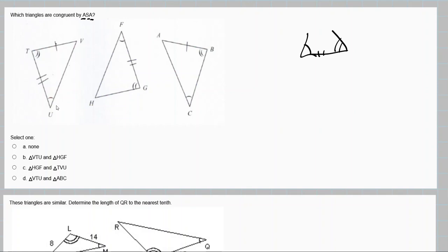That's triangle VTU and triangle HGF. Those are these two. If you chose none, it's quite possible that you'll still get that mark because there was an earlier version of this that had the wrong picture. I only fixed that late.